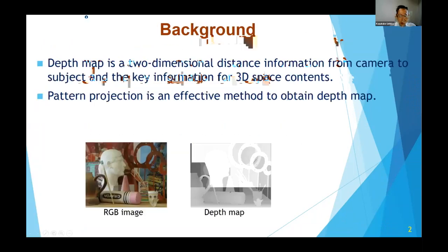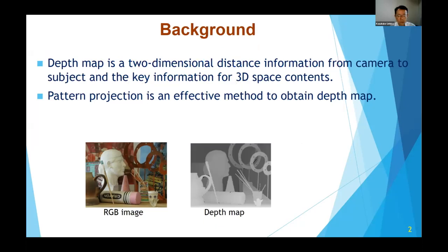This study is part of our research on acquiring a depth map of the subject from a subject image captured by a normal RGB camera and embedding it in the subject image invisibly. The depth map is two-dimensional distance information from the camera to the subject, as shown in the lower right in this slide, and it is key information for 3D space content.